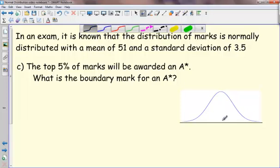So as ever, I've got my normal distribution curve here with 51. That's the mean for this one. And I need to find the top 5%. So I'm going to make a line here and state that this is 5% of the data.